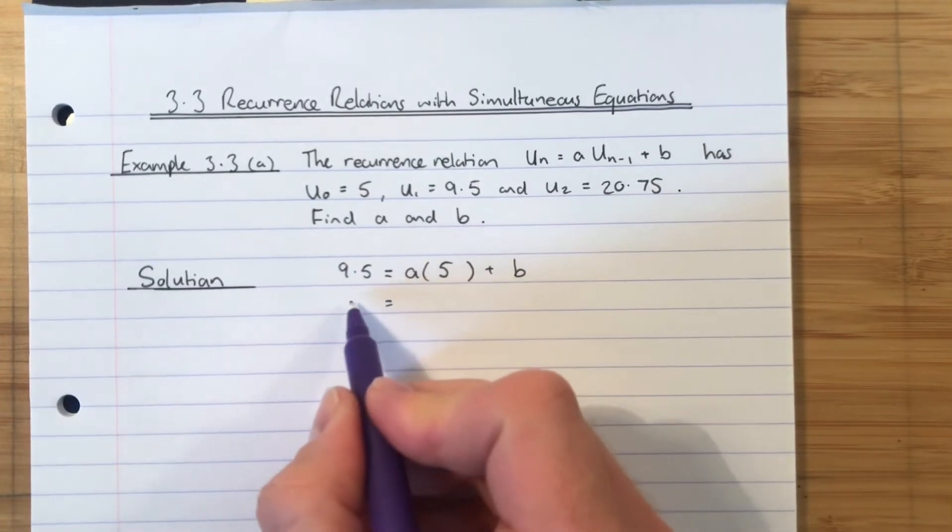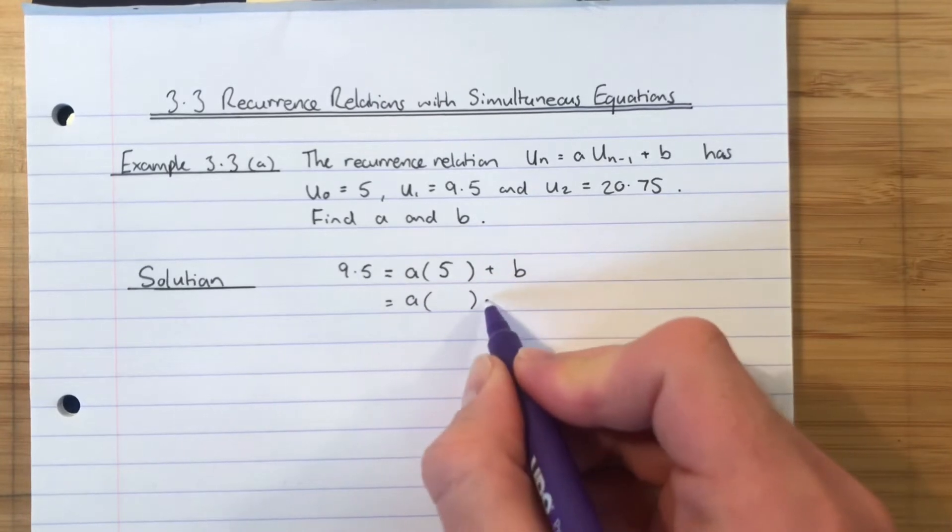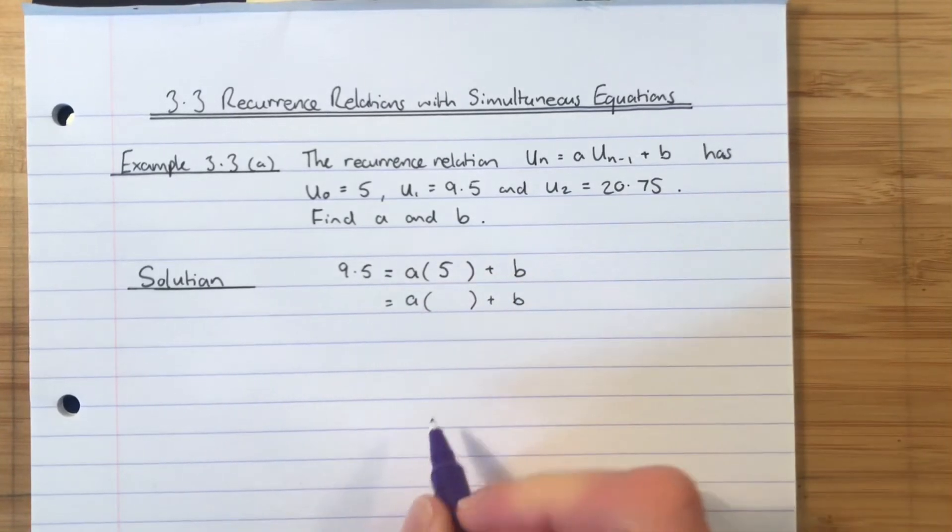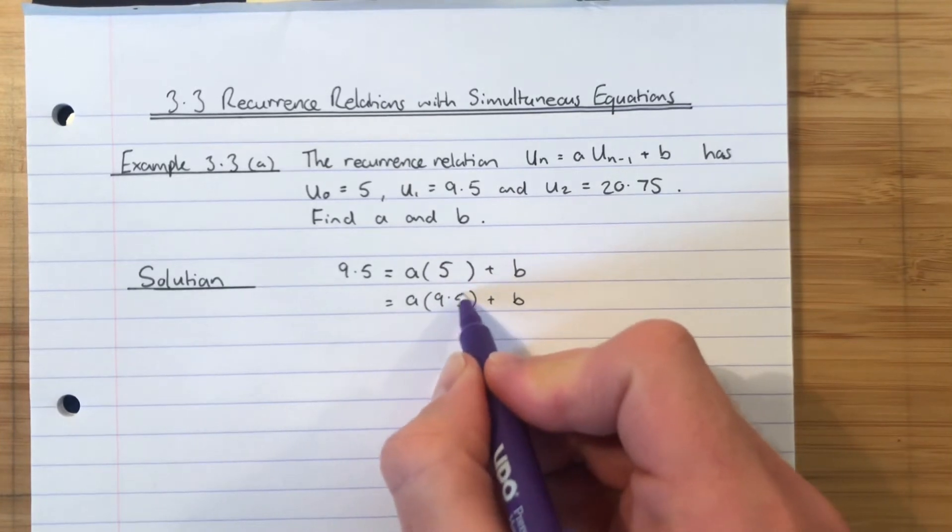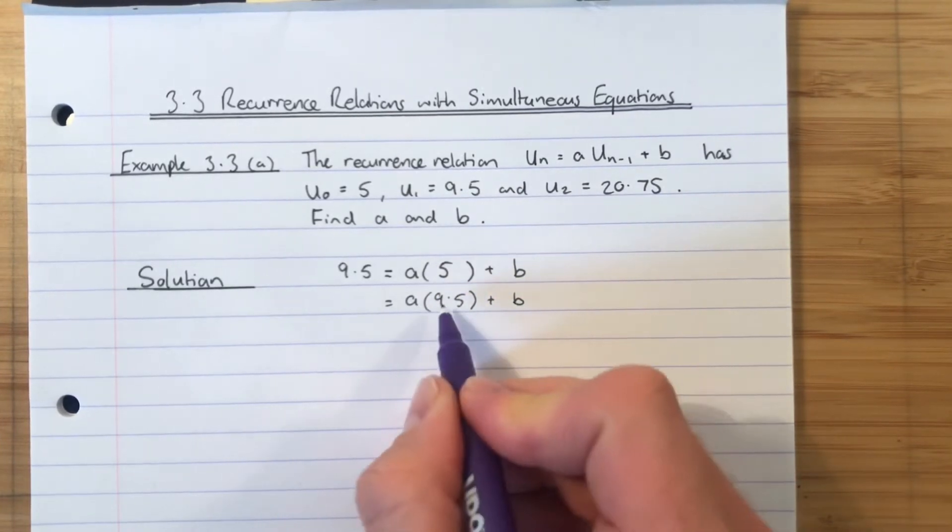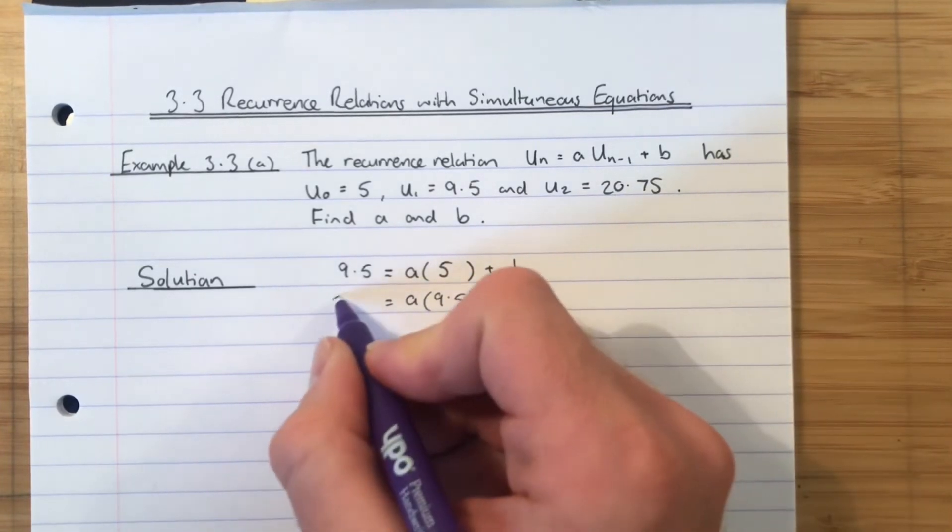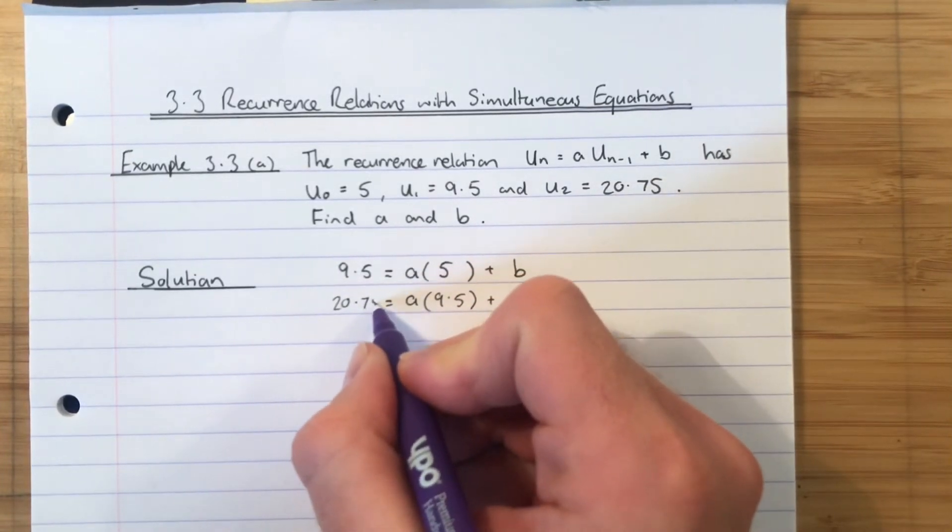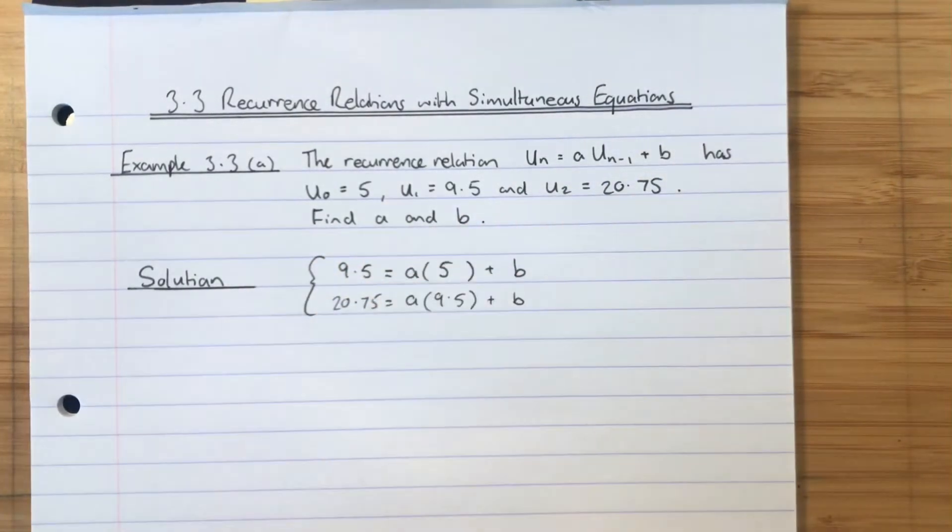Let's do the same again. Let's just do a blank recurrence relation. This is the next term equals A times the previous term. Add B. So if I sub 9.5 into the recurrence relation, I don't know what A is, I don't know what B is, but I know the next term I would get out would be 20.75. And those are simultaneous equations.